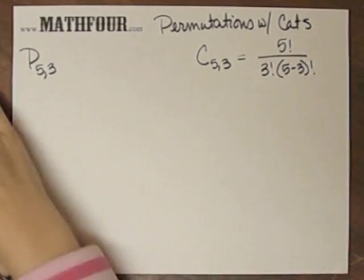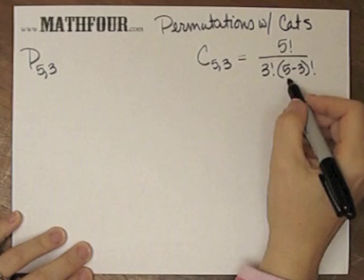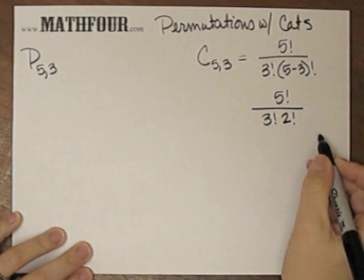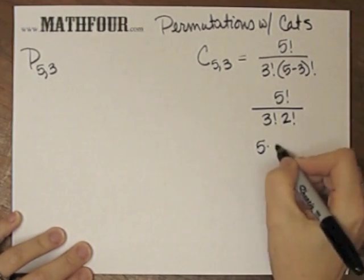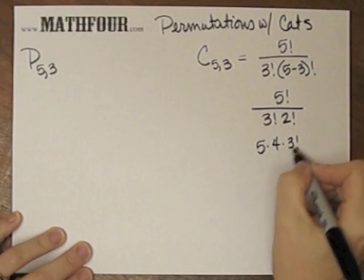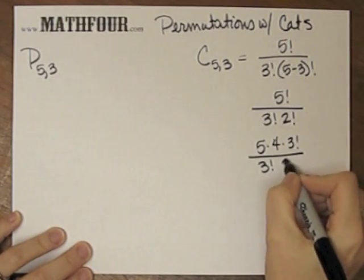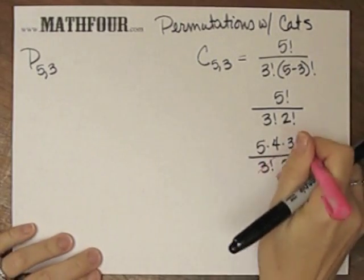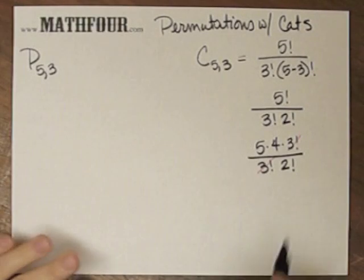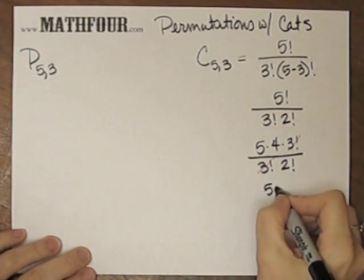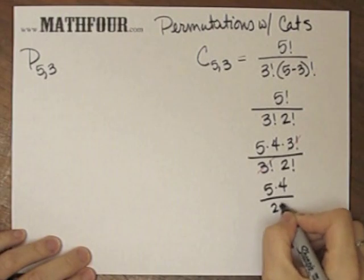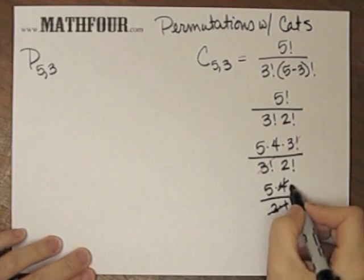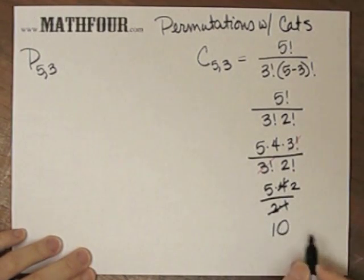I'm going to do the arithmetic. Five factorial over three factorial, two factorial. Stretch five out: five times four times three factorial. Three factorial, two factorial. Cancel these three factorials. Remember, factorials can only be canceled if they're exactly the same. Five times four over two times one. Two times one is two, and that can go into four twice, so I'm left with ten.